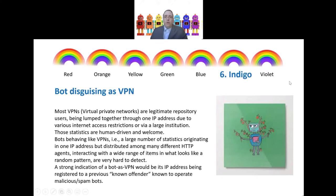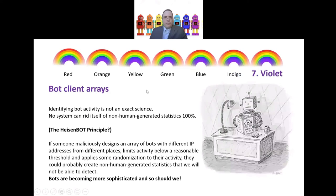Which brings us to the most difficult kind of machine-generated statistics to detect — one where we sometimes just throw our hands in the air. We can get close to pure human-generated statistics, but we will probably never reach 100% accuracy with open access repositories. These are bot client arrays. Identifying bot activity is not an exact science — I call it the Heisenbot principle. If someone maliciously designs an array of bots with different IP addresses from different places, limits activity below a reasonable threshold, and applies randomization to their activity, they could create non-human-generated statistics that we will not be able to detect.